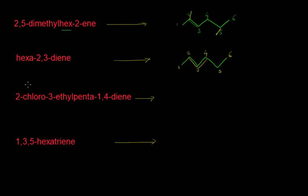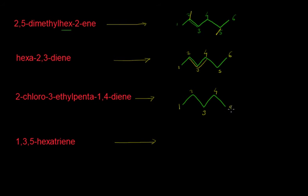Let us look at the third example: 2-chloro-3-ethyl-penta-1,4-diene. 'Penta' means we have 5 carbon atoms, so we draw the structure: 1, 2, 3, 4, and 5. We have two double bonds at position number 1 and 4. Let me write the numbering: 1, 2, 3, 4, and 5 — double bonds at position number 1 as well as 4.